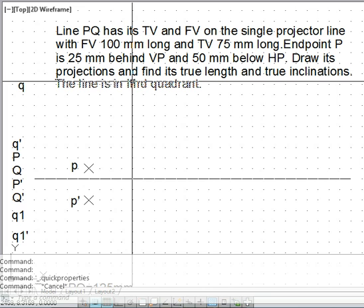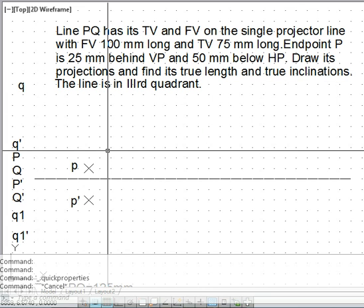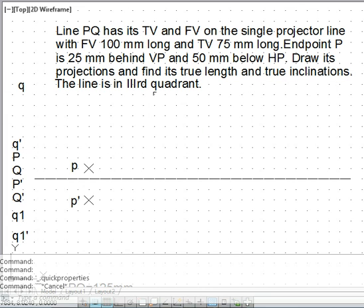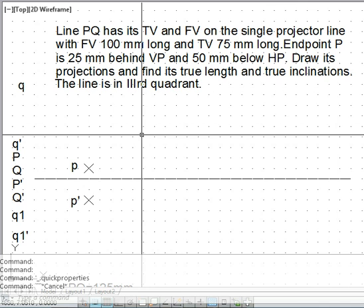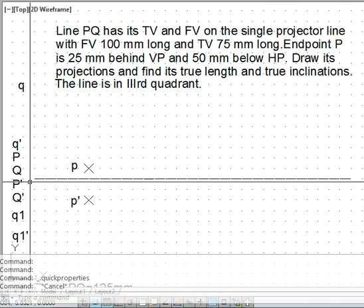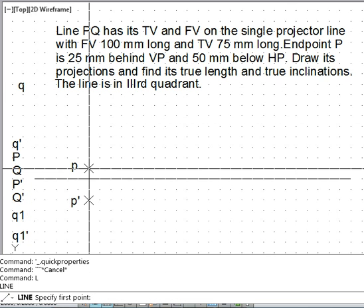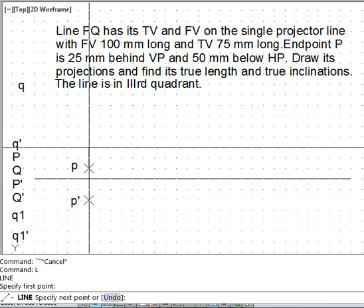Now as the line is in the third quadrant in one of the quadrants only, so we complete the top view. The top view length is 75 mm, so one, two, and three. So this is the top view.